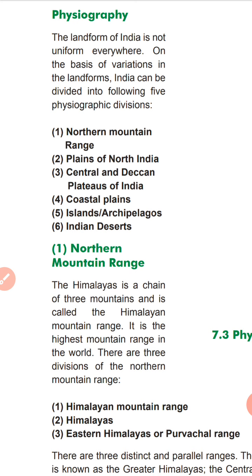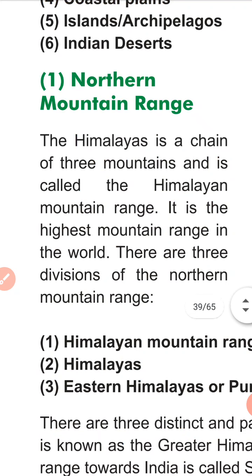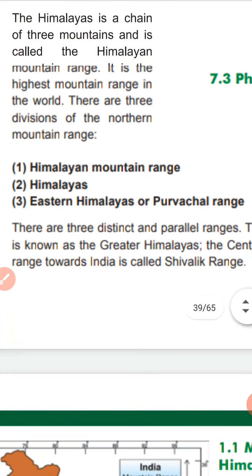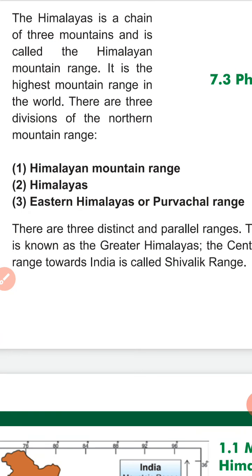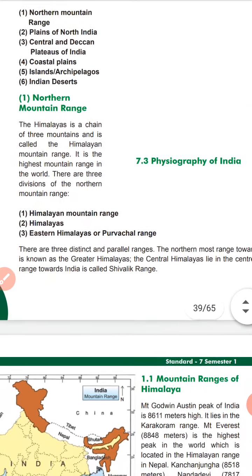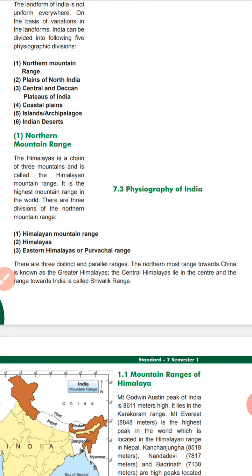The first division is the Northern Mountain Range. The Himalayas is a chain of three mountains called the Himalayan Mountain Range — it is the highest mountain range in the world. There are three distinct and parallel ranges: the Greater Himalayas (along the China border), the Central Himalayas, and the Shivalik Range.